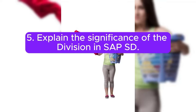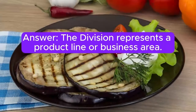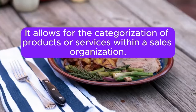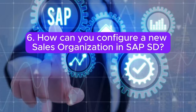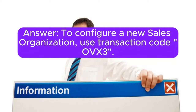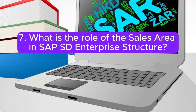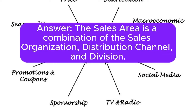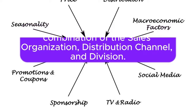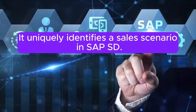Question 5: Explain the significance of the division in SAP SD. Answer: The division represents a product line or business area. It allows for the categorization of products or services within a sales organization. Question 6: How can you configure a new sales organization in SAP SD? Answer: To configure a new sales organization, use transaction code OVEX3. You define the sales organization, its description, and assign it to the company code. Question 7: What is the role of the sales area in SAP SD enterprise structure? Answer: The sales area is a combination of the sales organization, distribution channel, and division. It uniquely identifies a sales scenario in SAP SD.